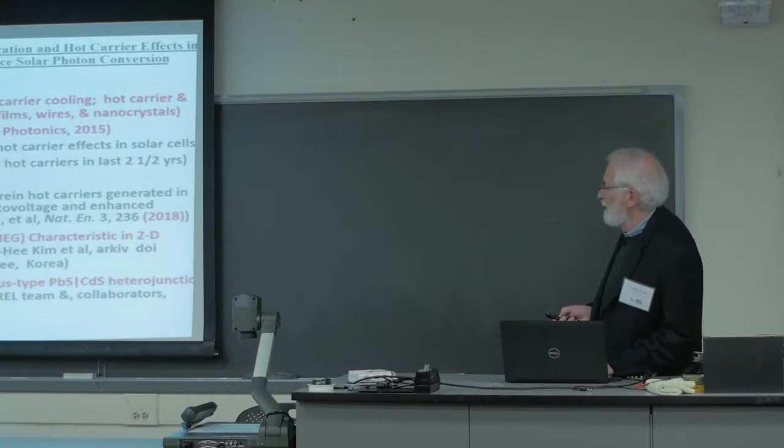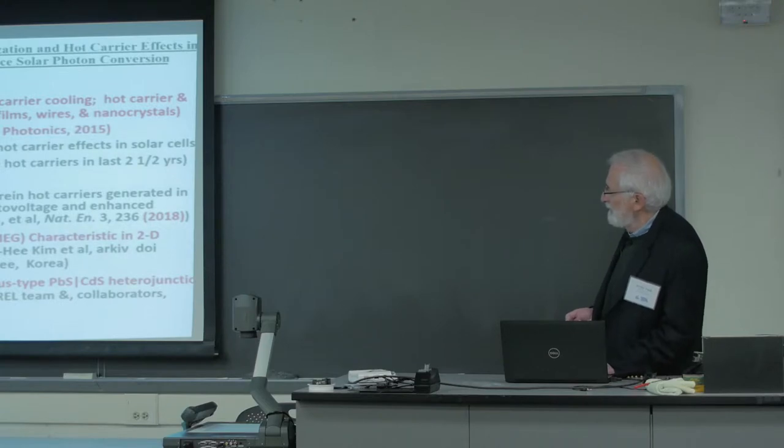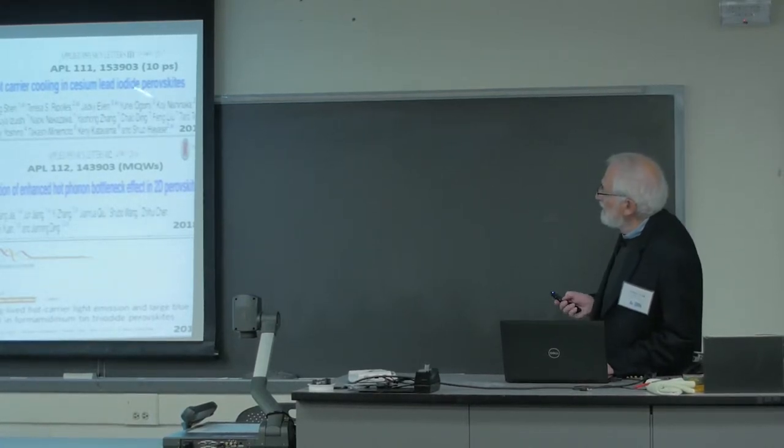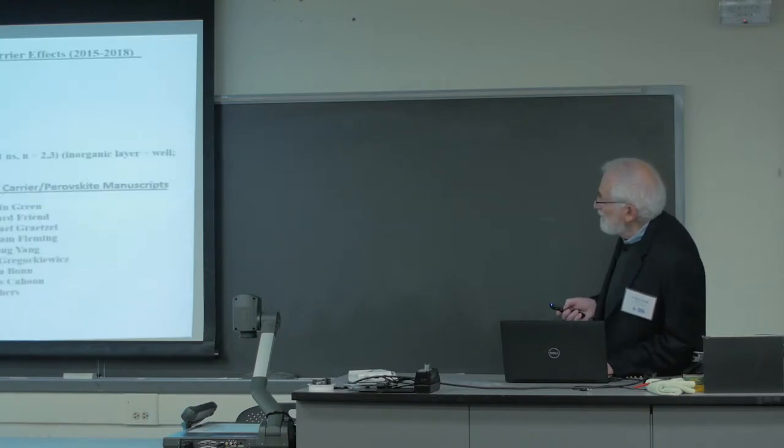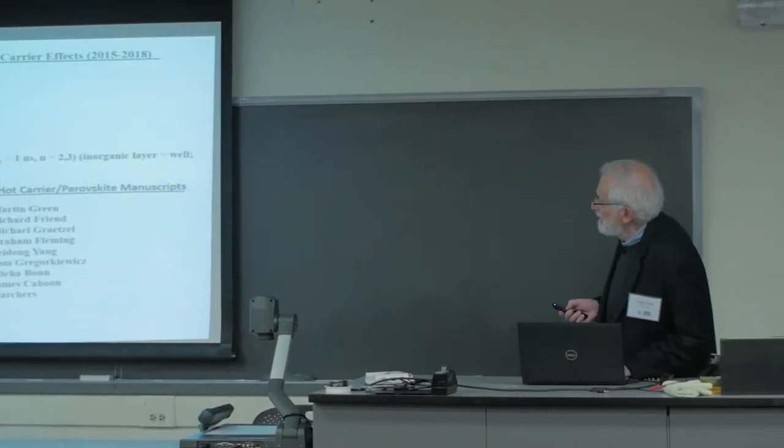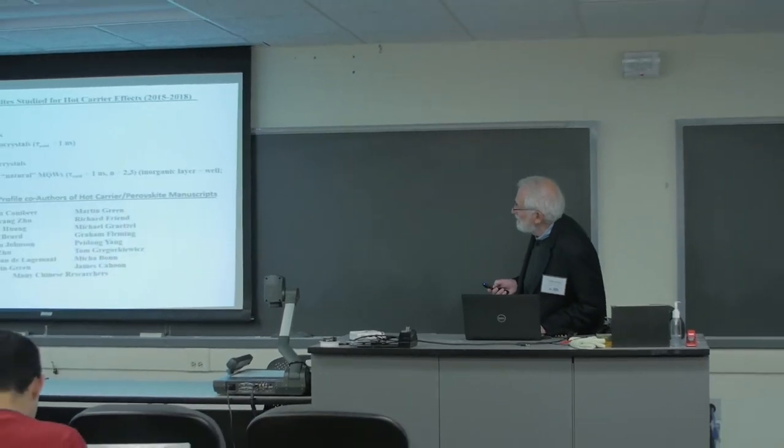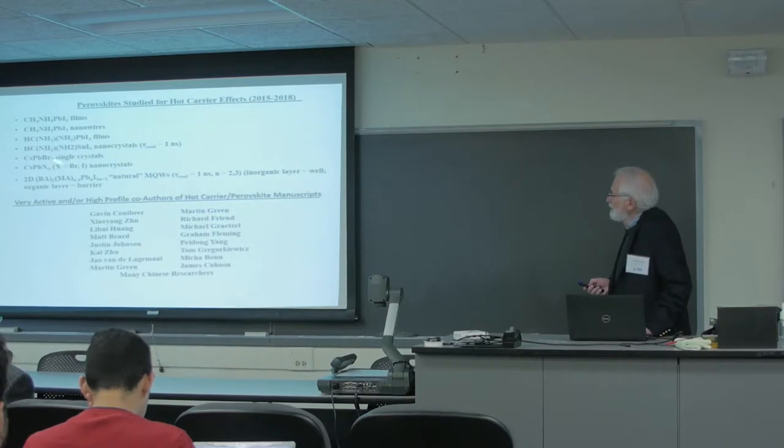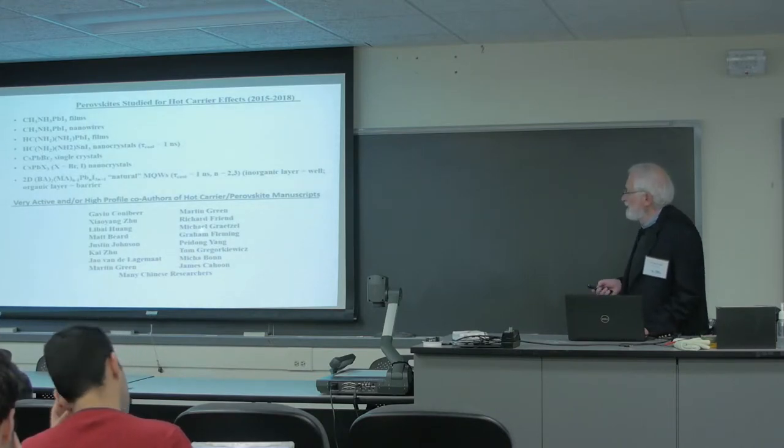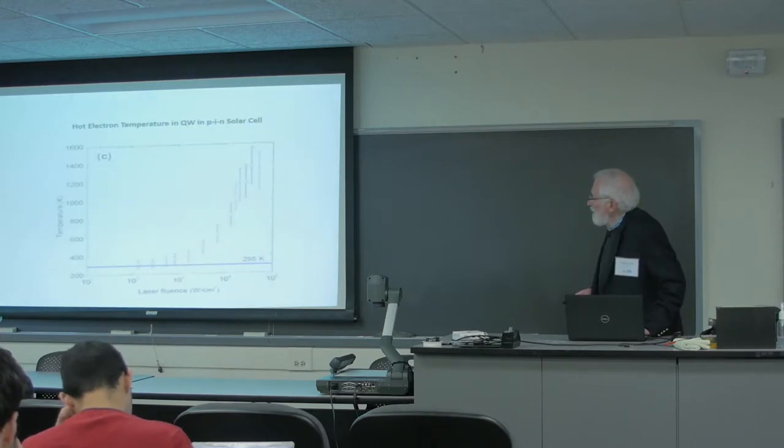So there's been 33 papers since 2015 to this year showing slow cooling, which is what you need. You have to have the cooling be slower than the extraction or the multiplication to get more than one electron per photon. You've got to beat the cooling. So this just shows some of the papers, high profile papers by high profile authors and in all types of perovskites. All the ones that are known, including the initial one, which is methyl ammonium lead. They all showed slow cooling.